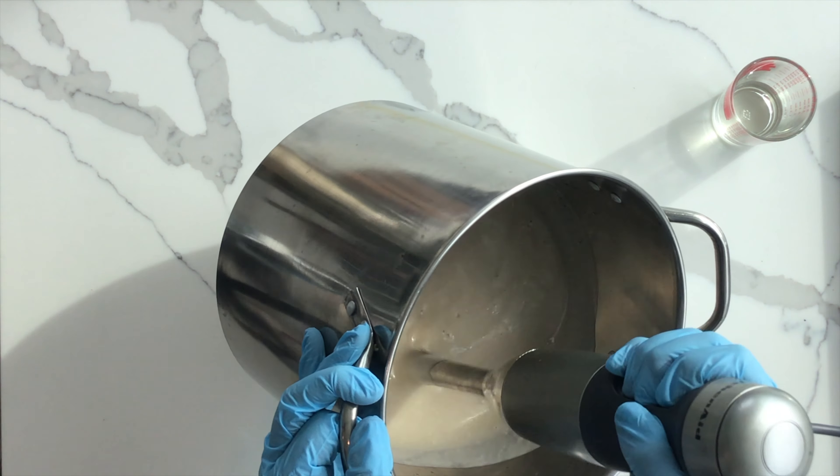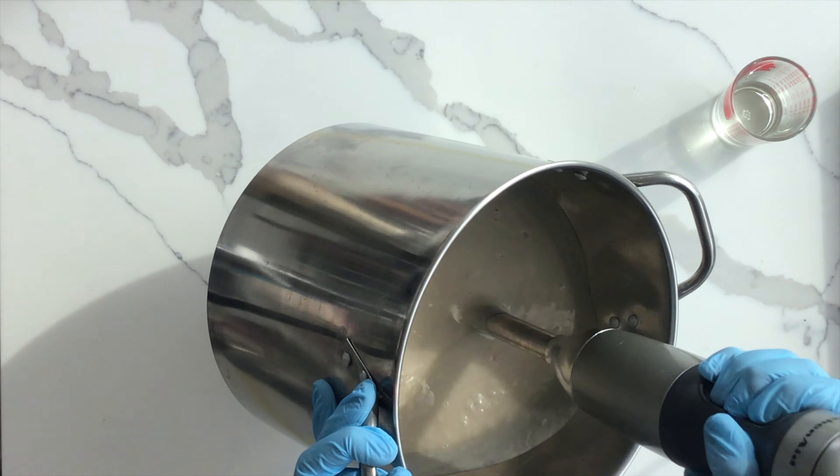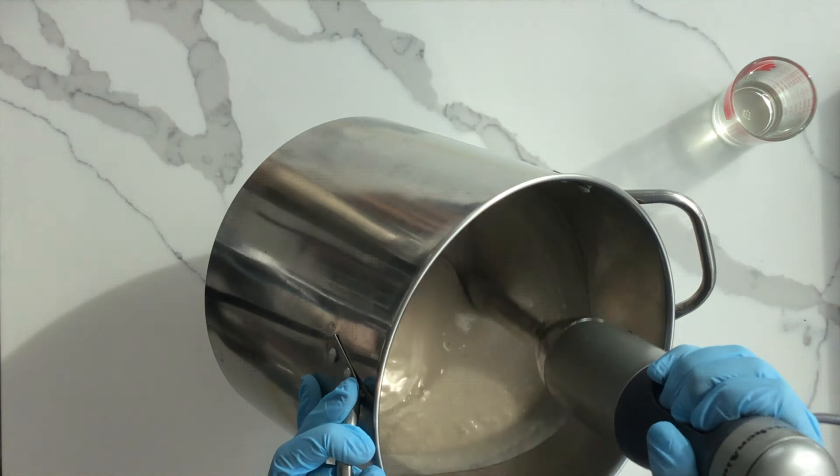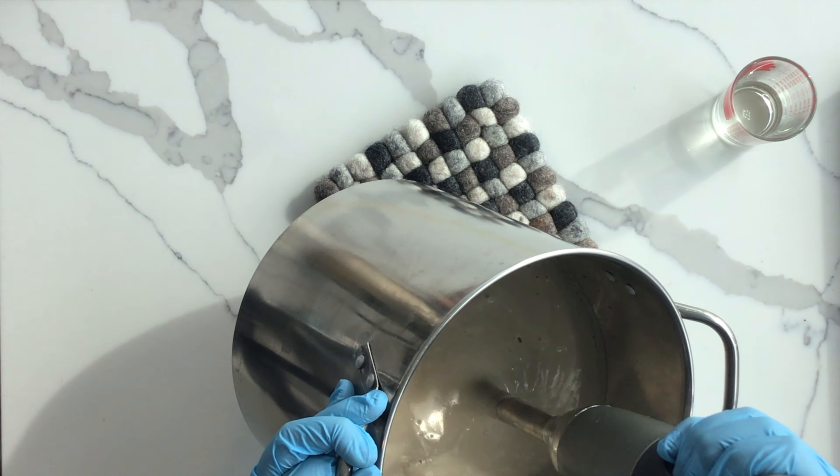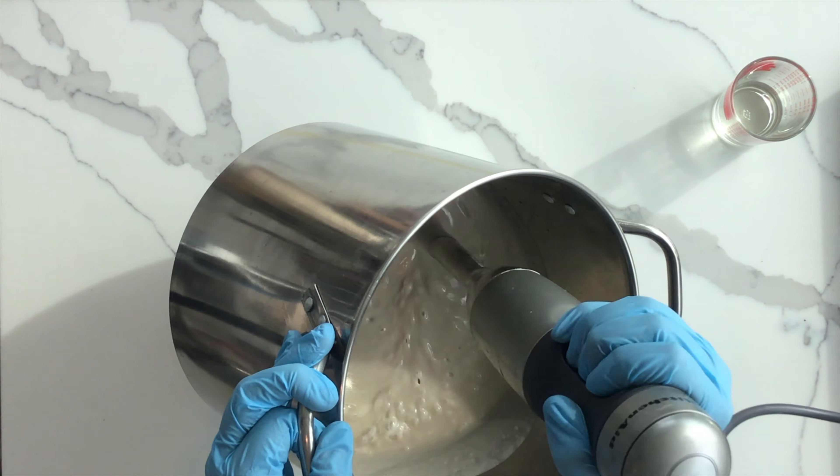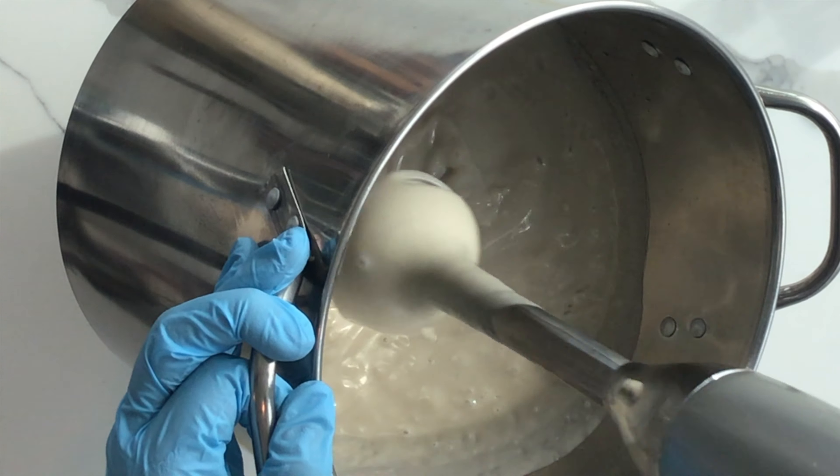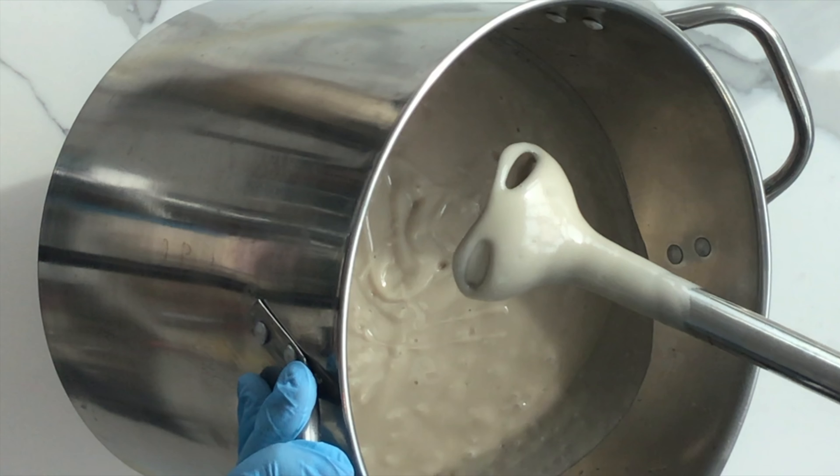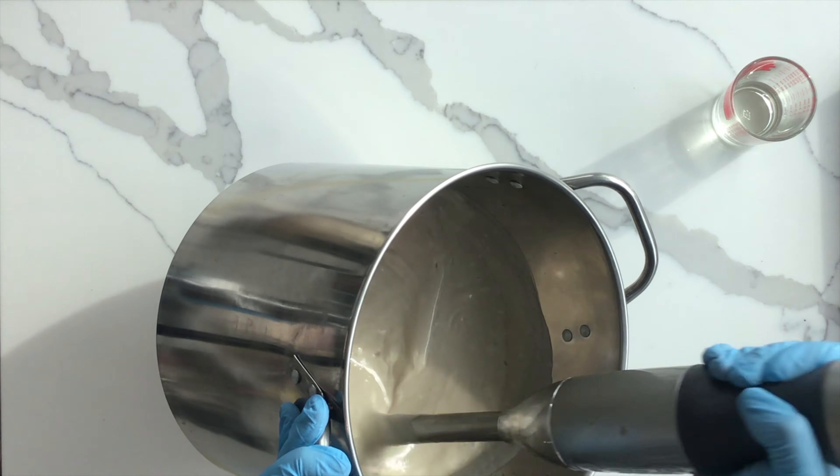The goal here is to mix the solution until it comes to a trace. You'll know it has reached a trace when it becomes thick like cake batter. A line of the soap will sit on the surface and this is what a medium trace looks like. If you mix it longer, the trace will become even thicker and less fluid.